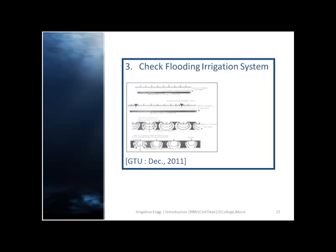The third method is check flooding irrigation. It is similar to ordinary flooding except that the water is controlled by surrounding the check area with low and flat levees. Levees are generally constructed along the contours having a vertical interval of about 5 to 10 cm. The confined flood area varies from 0.2 to 0.8 hectare. The check is filled with water at a fairly high rate and allowed to stand until the water infiltrates.